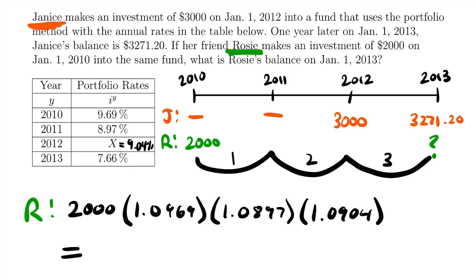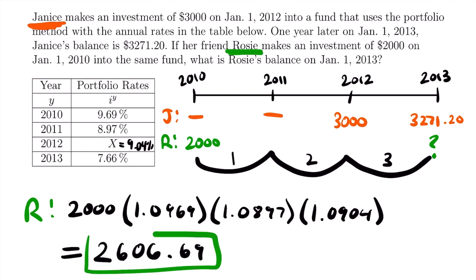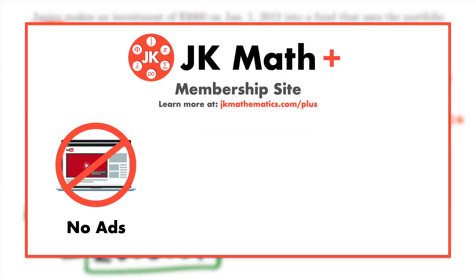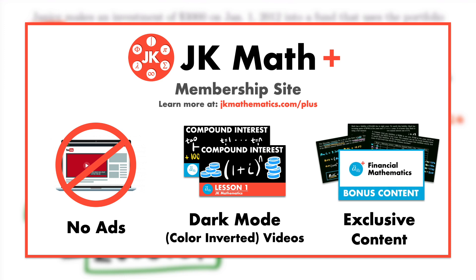If you plug that into your calculator and multiply $2,000 by these three accumulation factors, that gives us the accumulated value of Rosie's account in 2013, which is $2,606.69. That is the final answer to this problem. This was the last example for this video, but if you want to see another example, I do have one more available on my membership site.